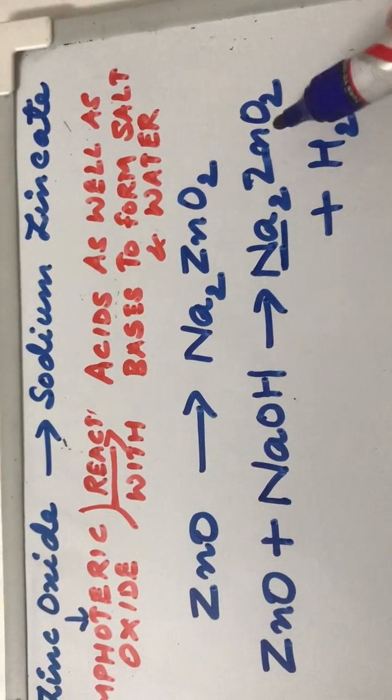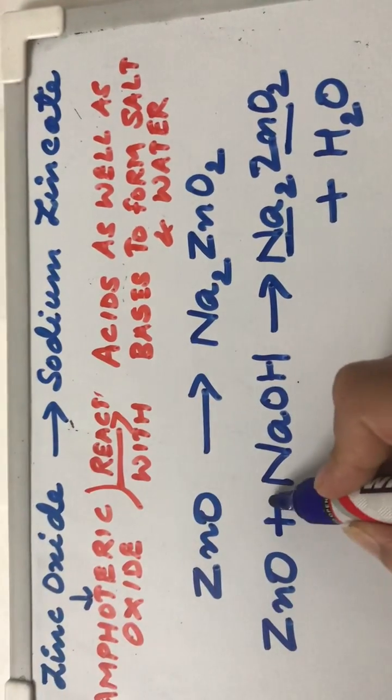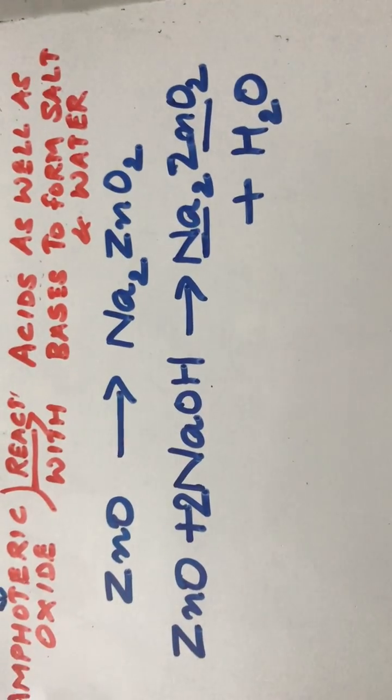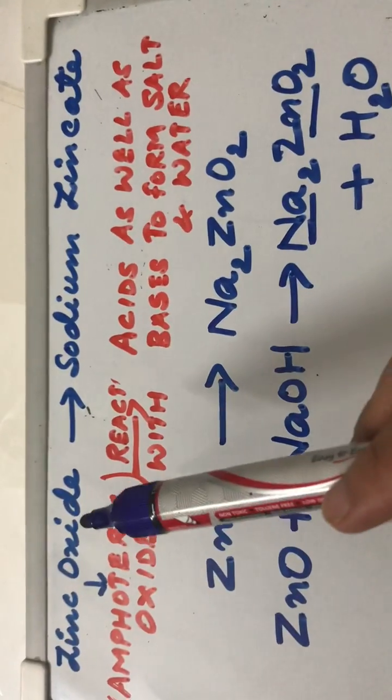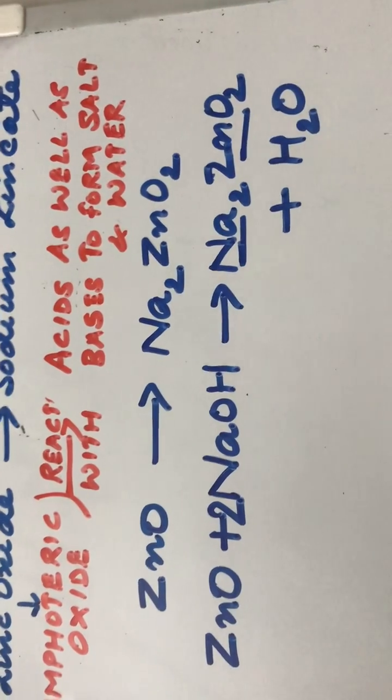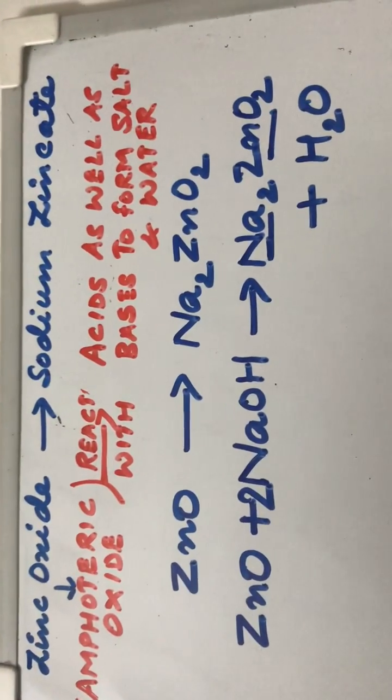It is a complex salt containing sodium ion and zincate ion. So we just need to put a 2 here and this gives us a balanced equation for the reaction of zinc oxide with sodium hydroxide to form sodium zincate plus water. This is how we solve this equation.